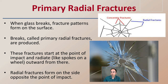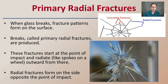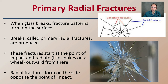Primary radial fractures: when glass breaks, the fracture patterns form on the surface. Breaks called primary radial fractures are produced, and those radial fractures radiate outwards like the spokes of a wheel. These fractures start at the point of impact and radiate outward, creating that starburst effect. Radial fractures form on the side opposite the point of impact, and we can see a great depiction of them here — those sunbeam-like lines.